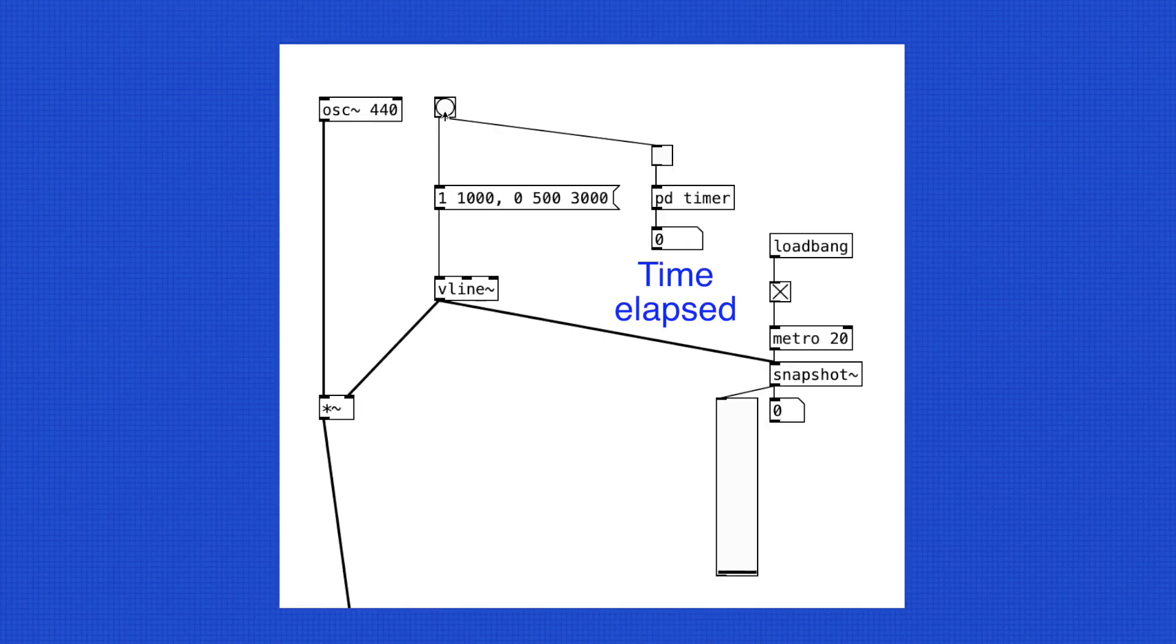Let's analyze what's going on here. When this message is activated, the envelope goes from 0.0 to 1.0 in 1,000 milliseconds.